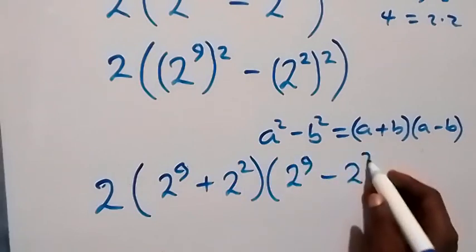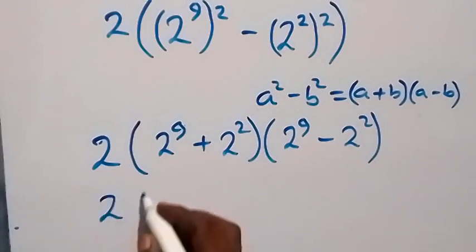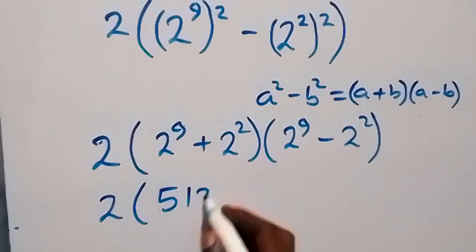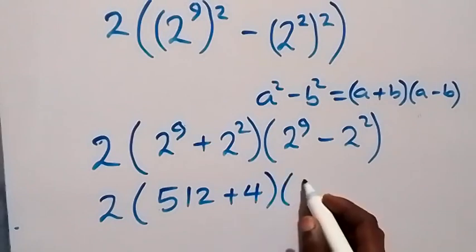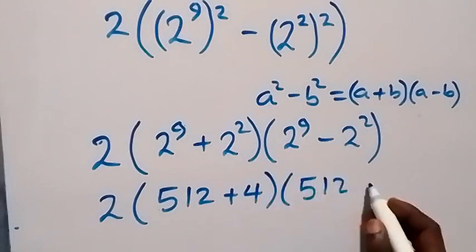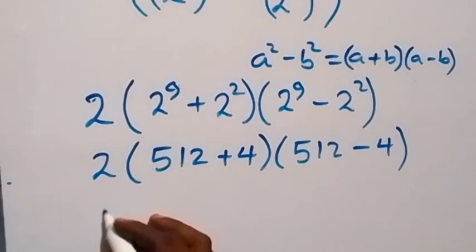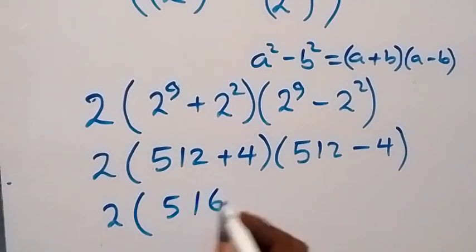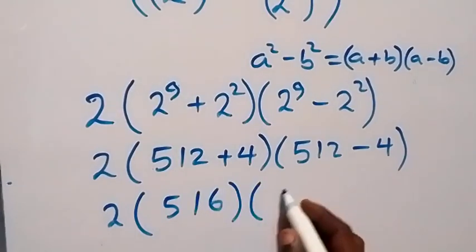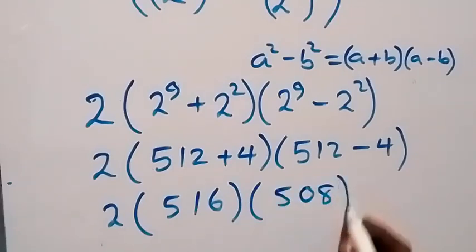Now, 2 raised to power 9 is 2 multiplied 9 times, that's 512. And 2 raised to power 2 is 4. So we have 2 into bracket (512 plus 4) times (512 minus 4), which gives us 2 into bracket 516 times 508.